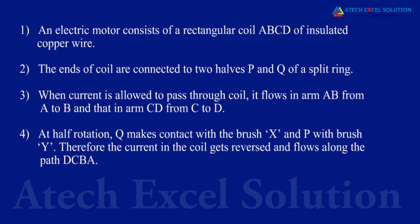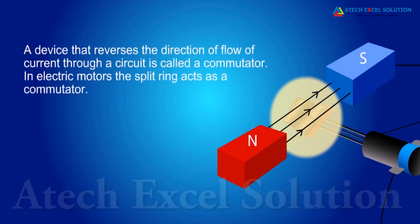In electric motors, the split ring acts as a commutator. The reversal of current also reverses the direction of force acting on the two arms AB and CD. The reversing of the current is repeated at each half rotation, giving rise to continuous rotation of coil and to the axle.